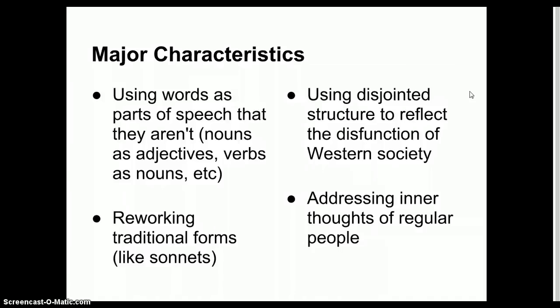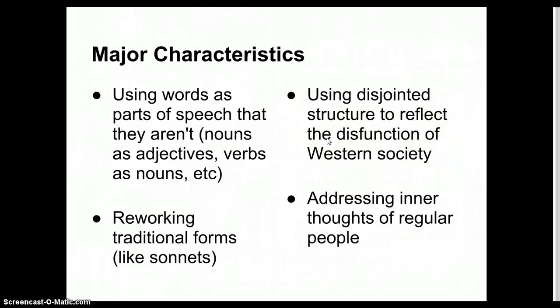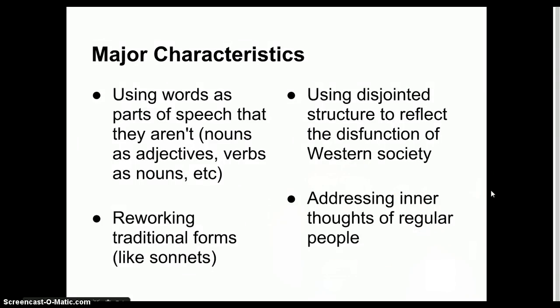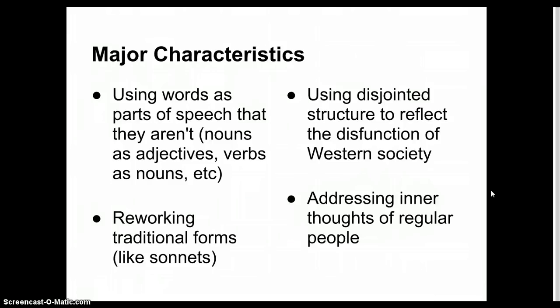One of my favorite poems, The Wasteland by T.S. Eliot, is a modernist work. The whole poem seems to have no central theme or central image that it's focusing on, but the focus is the disjointed structure and the dysfunction and crumbling of Western society. Also, this literature is meant to address the inner thoughts of regular people — it's less about the wealthy, about the upper class, and more about the regular common man.